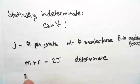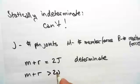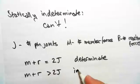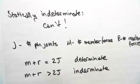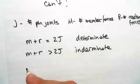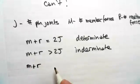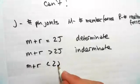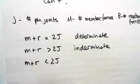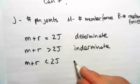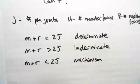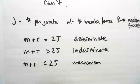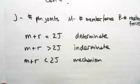If M plus R is greater than 2J, then it is indeterminate and we can't work it out that way. For a mechanism — which won't be covered much in this course as it simply means the structure is moving — if M plus R is less than 2J, then it is a mechanism. In most cases in this course, you'll get determinate or indeterminate.